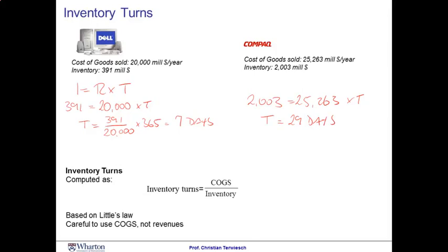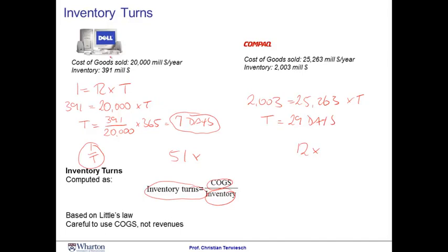Instead of saying that Dell keeps their dollar bills for 7 days inside the operation, we can refer to 1 over T as the inventory turns. If you're keeping your dollar bills for 7 days, given that there are 52 times 7 days in the year, you're turning your inventory 52 times in the year. This is the concept of inventory turns: 1 over T is simply COGS divided by inventory. We see that Dell turns its inventory roughly 51 times in the year, while Compaq is turning it roughly 12.6 times in the year. When you do these calculations, be careful — use COGS, not revenue, to do these flow unit analyses, because the margins that the companies make have really no impact on these calculations.